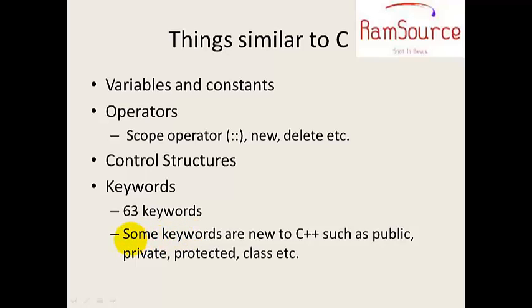Some keywords are specific to C++, such as public, private, protected, class, and others. There are 63 keywords, each performing specific functionality. We will discuss these in upcoming sessions.